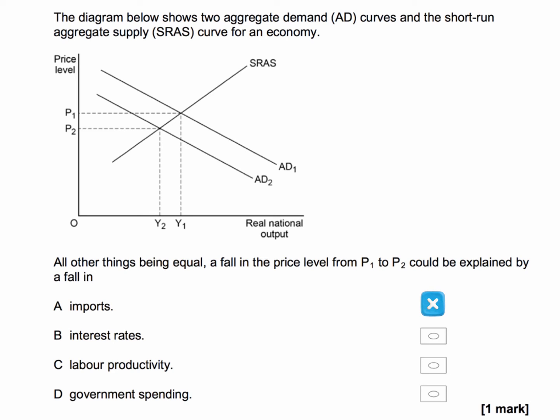What about fall in imports? Well, imports of course is C plus I plus G plus X minus M. So a fall in imports actually increases aggregate demand.